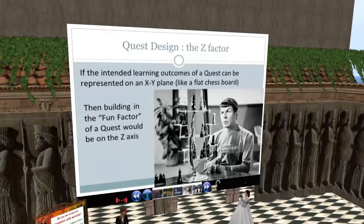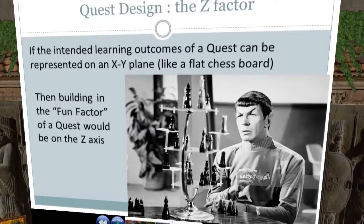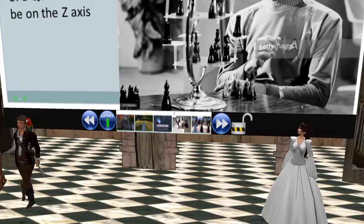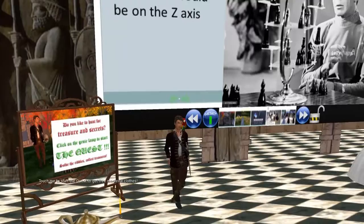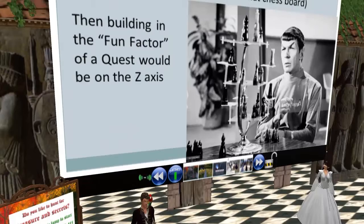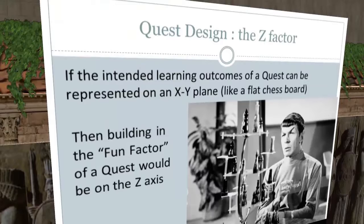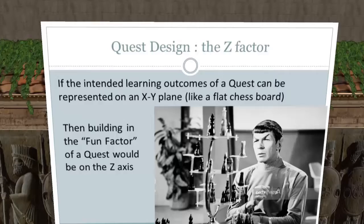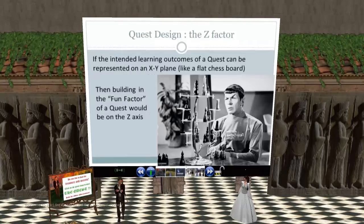For my last slide, I was trying to describe how you achieve the motivation to gamify a process — I thought about what I call the Z factor. If the intended learning outcomes of a quest can be represented on an XY plane like a flat chess board, then building in the fun factor is on the Z axis. You have to think: how can I get the students where I want them to go but in a fun way? Magic doors, clues, secrets, and rewards in the form of clothing, jewelry, swords, and an old blunderbuss pistol build fun into the environment.